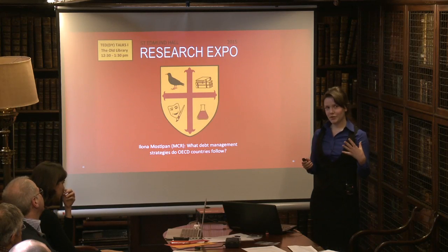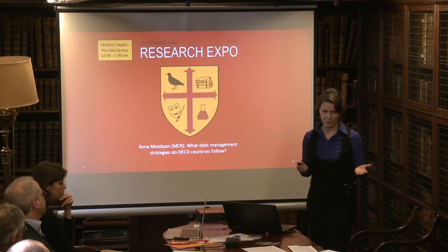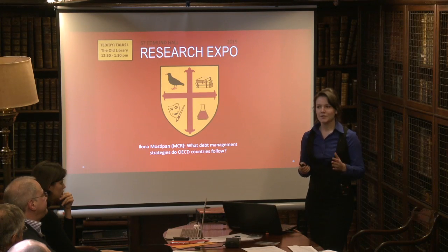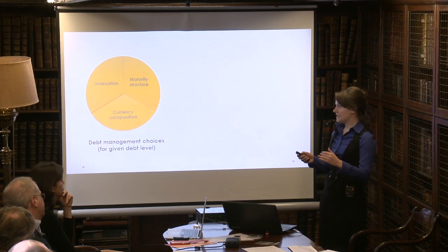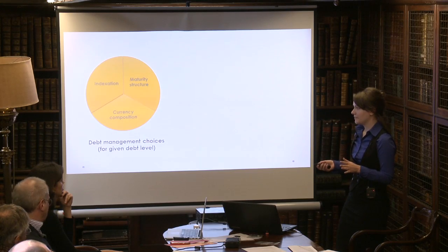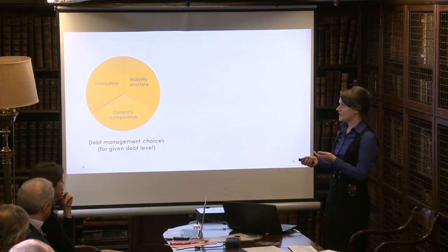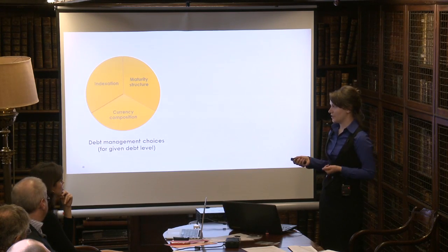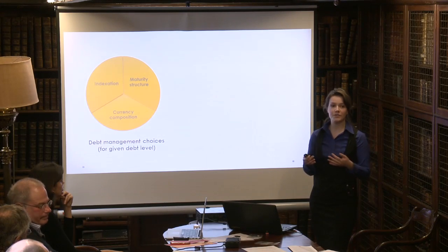Now, if you're a government, of course, you would first need to decide how much new debt to issue. That is primarily driven by your fiscal budget, so we're going to set that question aside. Once you know your given debt level, you essentially make three choices: what currency to issue it in — your local currency or foreign currency — whether to index your debt to anything such as inflation, as well as the maturity structure, meaning what composition of your new borrowing should be short term versus long term.